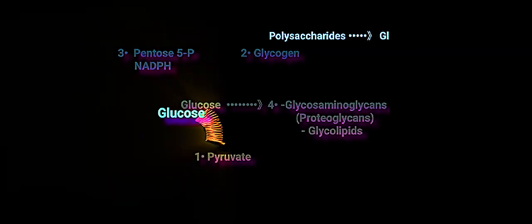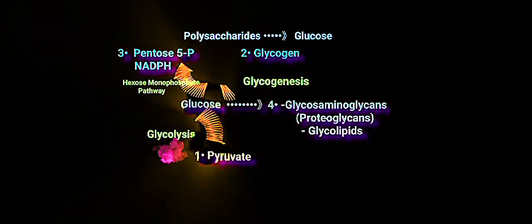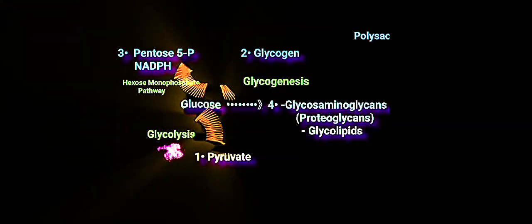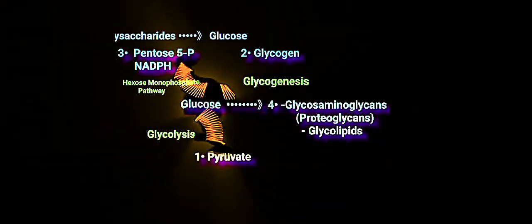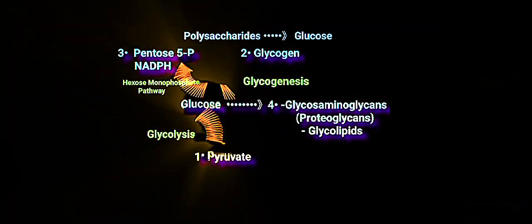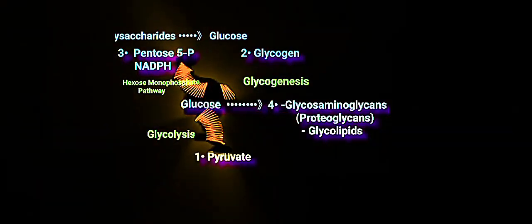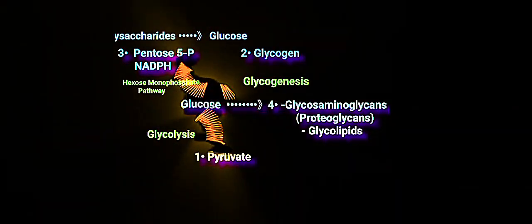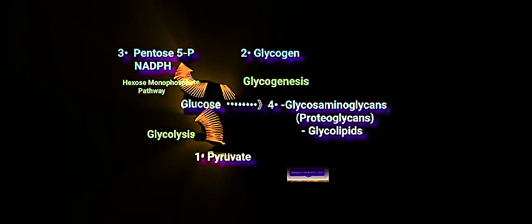Glucose has at least four uses in the cell. The first is through glycolysis to produce energy and two molecules of pyruvate. The second is storage of glucose as glycogen, which occurs in both liver and muscle. The third is in the hexose monophosphate pathway, or pentose phosphate pathway, which produces NADPH and a pentose phosphate or ribose phosphate needed for nucleotide biosynthesis. The fourth important use is in glycosaminoglycans, important extracellular matrix components, and glycolipids, which are plasma membrane components.